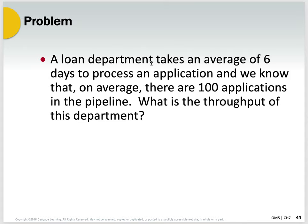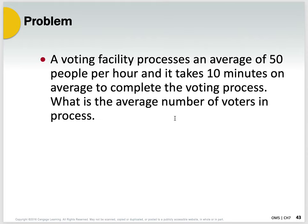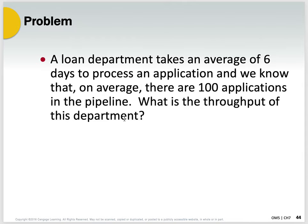Problem two: a loan department takes an average of six days to process an application — this must be like the 1950s with no computers. We know that on average there are 100 applications in the pipeline. What is the throughput? They've actually asked you for throughput, so they're giving you the flow time and the WIP, and you have to find the throughput, which is the rate.